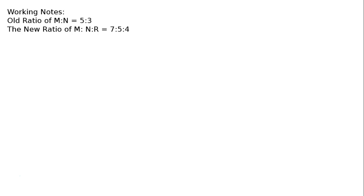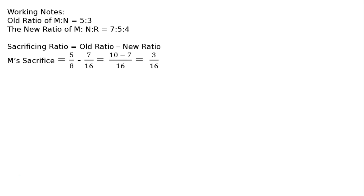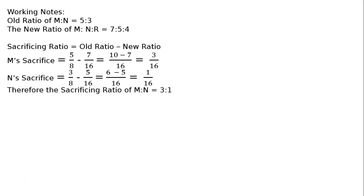Working notes. Old ratio of M to N is equal to 5 is to 3. The new ratio of M to N to R is equal to 7 is to 5 is to 4. Sacrificing ratio equals old ratio minus new ratio. M's sacrifice: 5/8 minus 7/16 — LCM is 16 — equals 10/16 minus 7/16, that is 3/16. N's sacrifice: 3/8 minus 5/16 — LCM is 16 — equals 6/16 minus 5/16, that is 1/16. Therefore, the sacrificing ratio of M to N is equal to 3 is to 1.